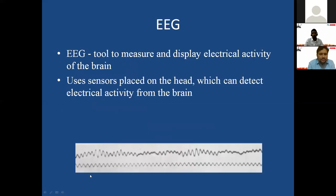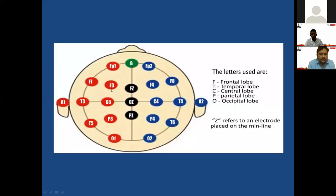EEG is basically a tool to measure and display the electrical activity of the brain. While recording EEG, we use sensors placed on the head that can detect the electrical activity from the brain, and that electrical activity appears in the form of waveforms. This picture shows the placement of electrodes over the head while EEG is being recorded.